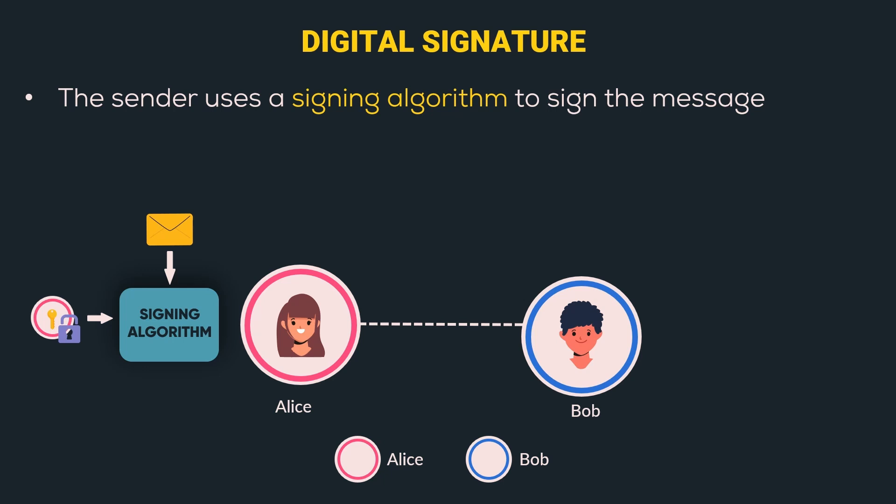You may be wondering what this private key is, because till now we had been using a secret key. A private key is a key that is only known to Alice — it is not known to Bob. It is private to Alice, hence giving it its name: private key. This was a very abstract explanation; we will cover this topic in detail in future videos, but for now this is enough to understand the topic.